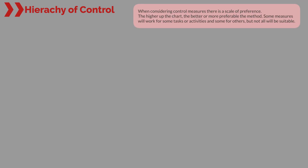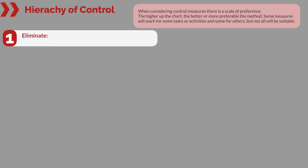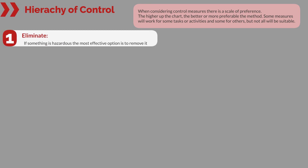Hierarchy of control. When considering control measures, there is a scale of preference — the higher up the chart, the better or more preferable the method. Some measures will work for some tasks or activities and some for others, but not all will be suitable. Step one: eliminate. If something is hazardous, the most effective option is to remove it.